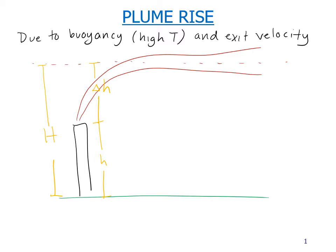Now there are many empirical equations for this. We will talk about the Holland equation, but there's also the Briggs and others. Holland's formula is: delta h, the plume rise, equals v sub s times d sub s over u sub s times 1.5 plus 0.00268 times P times d sub s times quantity T sub s minus T sub a over T sub s.